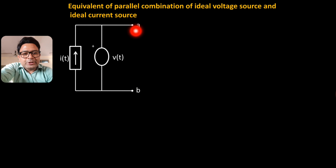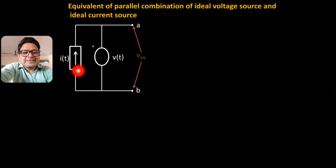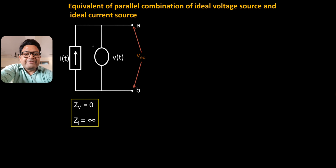We will find out the total or equivalent voltage across terminals A and B. Since this is an ideal voltage source, its internal impedance ZV is 0. And since this is an ideal current source, its internal impedance ZI is infinite. So we have the values of ZV and ZI — the internal impedances of the ideal voltage source and ideal current source respectively.